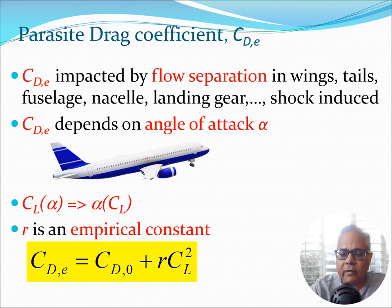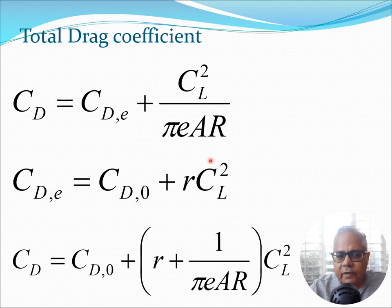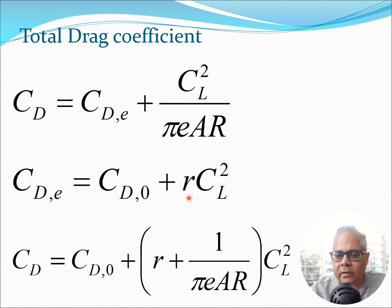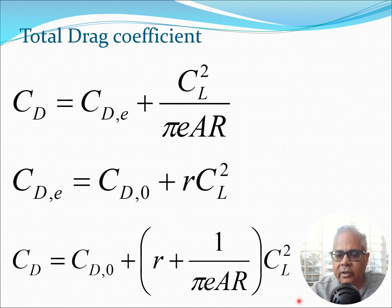We now substitute this expression for CDE into the drag polar equation. Taking CDE = CD0 + r·CL² and substituting into CD = CDE + CL²/(π·e·AR), we get an expanded equation. The r term and the 1/(π·e·AR) term are combined, and the CL² term is factored out. This reveals clearly a component not dependent on CL or alpha (the constant part), and a component dependent on CL², whose coefficient has been modified by the r·CL² contribution.